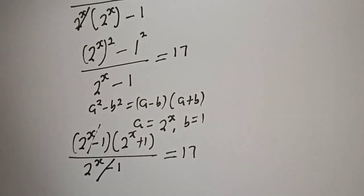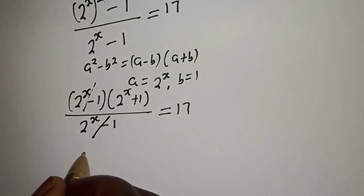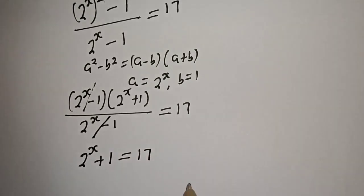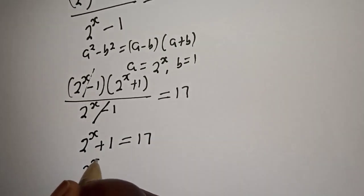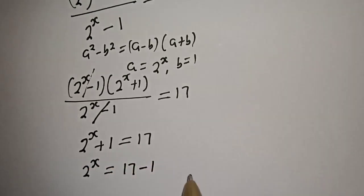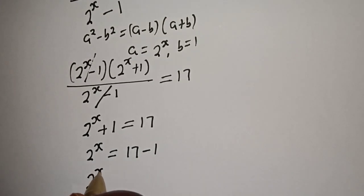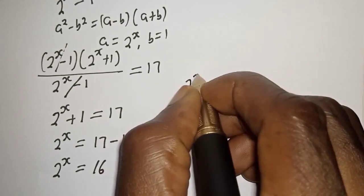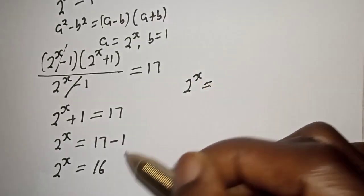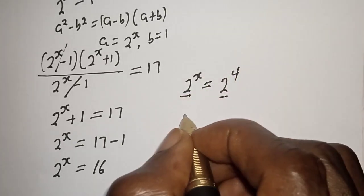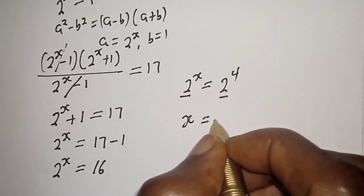We have 2 raised to the power s plus 1 equals 17. So 2 raised to the power s equals 17 minus 1, which is 16. Then 2 raised to the power s equals 16, which can be written as 2 raised to the power 4. Both sides have base 2, so we work with the exponents. Therefore, s is equal to 4, and this is the final answer.